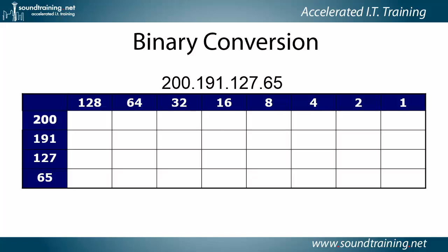Earlier we did the binary conversion going from binary to decimal. Now let's go from decimal to binary. We'll use a table, which you see on screen right now. The rows represent the octets of the IP address we're converting, and the columns represent the decimal values of each bit in an 8-bit binary number.